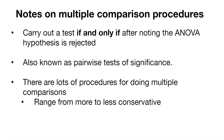A couple of notes on these multiple comparison procedures. The first is that we only do multiple comparison procedures if and only if the ANOVA hypothesis was rejected. If we did the ANOVA and didn't find any significant difference across our treatment means, there's no reason to go any further — we can just stop our analysis. We'll only do multiple comparisons if we found a significant difference in the ANOVA stage.